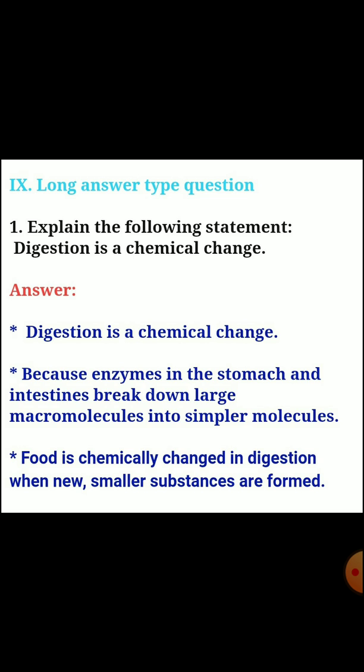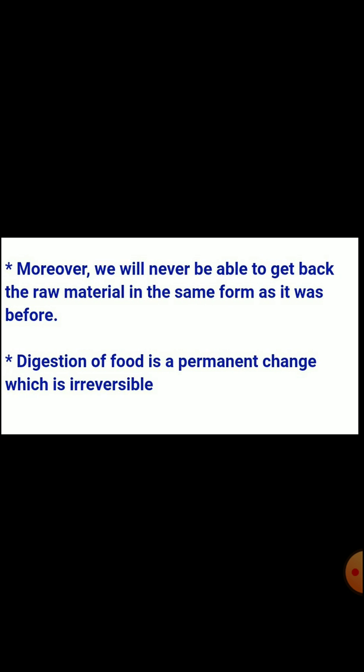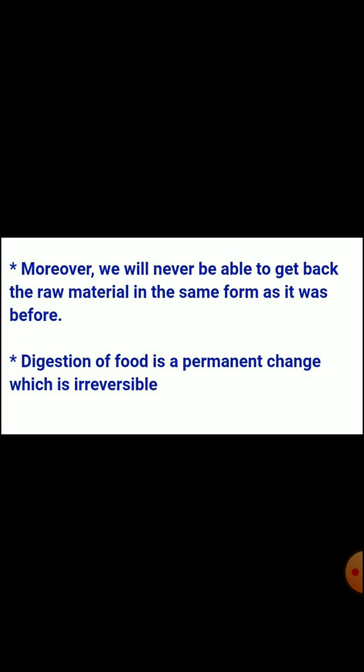Next, Section nine - long answer questions. Question one: explain the statement 'digestion is a chemical change.' Answer: digestion is a chemical change because enzymes in the stomach and intestines break down large macromolecules into simpler molecules. Food is chemically changed in digestion when new, smaller substances are formed. Moreover, we will never be able to get back the raw material in the same form. Digestion is a permanent and irreversible change.